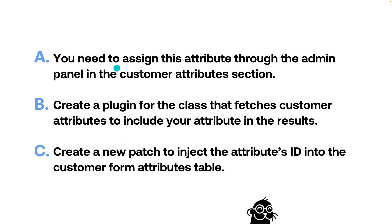Let's look at three different options and see if we can identify the right solution from memory. Option A: you need to assign this attribute through the admin panel in the customer attributes section. Option B: create a plugin for the class that fetches customer attributes to include your attribute in the results. Or option C: create a new patch to inject the attribute's ID into the customer form attributes table.